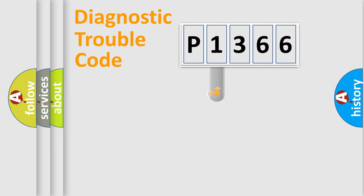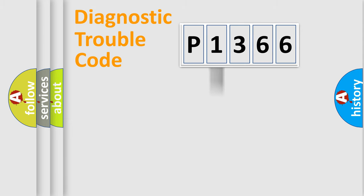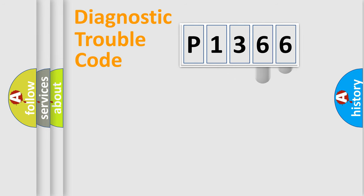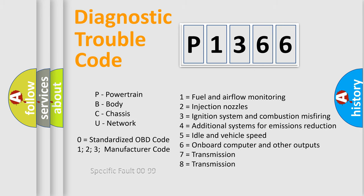This distribution is defined in the first character of the code. If the second character is expressed as zero, it is a standardized error. In the case of numbers 1, 2, or 3, it is a manufacturer-specific error expression. The third character specifies a subset of errors. The distribution shown is valid only for the standardized DTC code, and only the last two characters define the specific fault of the group. This division is valid only if the second character code is expressed by the number zero.